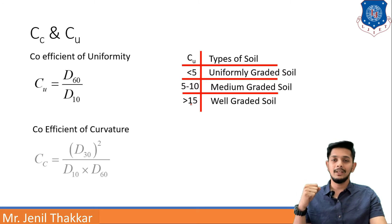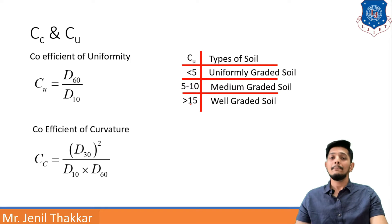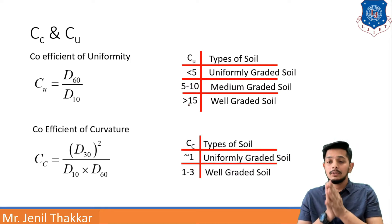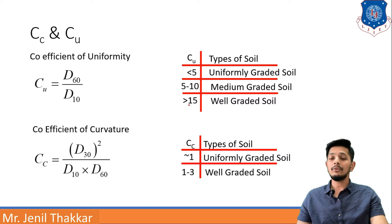Coefficient of curvature CC is defined as D30 square upon D10 into D60. You know D10, D30 and D60 very well now from previous lecture also. Now if CC comes around 1 or about 1 it is uniformly graded soil and if CC is in the range of 1 to 3 it will be a well graded soil. So that is how you can say CC and CU works.